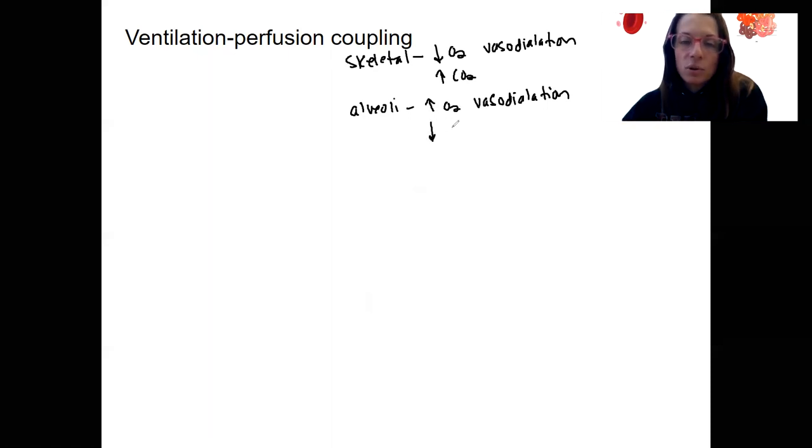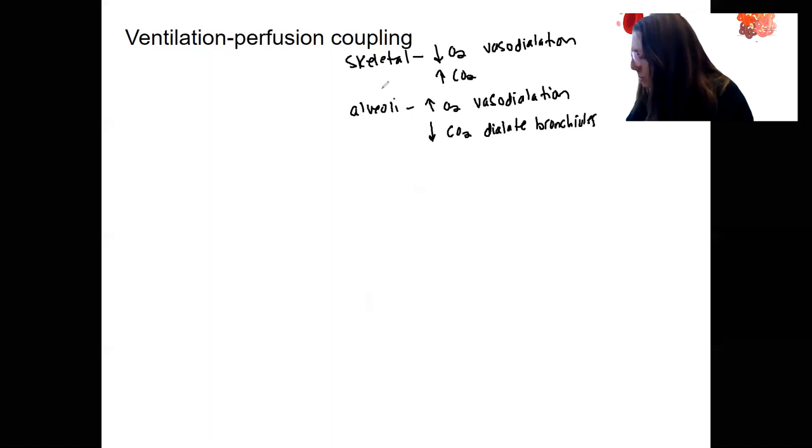Likewise, low CO2 is actually, and this is where this is another caveat, is going to dilate our bronchioles. I'm sorry, I saw that just in time. This is high. High CO2 is going to dilate the bronchioles to be able to exchange that CO2 out. So it's two opposite mechanisms, the two gases.